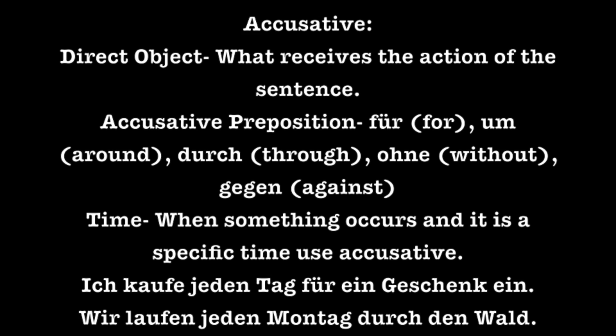It's used with time when you're talking about something that's specific, which means that it has to be exactly that time. For example, ich kaufe jeden Tag für ein Geschenk ein — I shop every day for a gift. Wir laufen jeden Montag durch den Wald — We walk every Monday through the forest. In these sentences, we have a subject followed by a verb and then a time element. The time element in these sentences is in the accusative case because there are specific times. After the time element, we have prepositions für and durch, both of which are accusative prepositions.